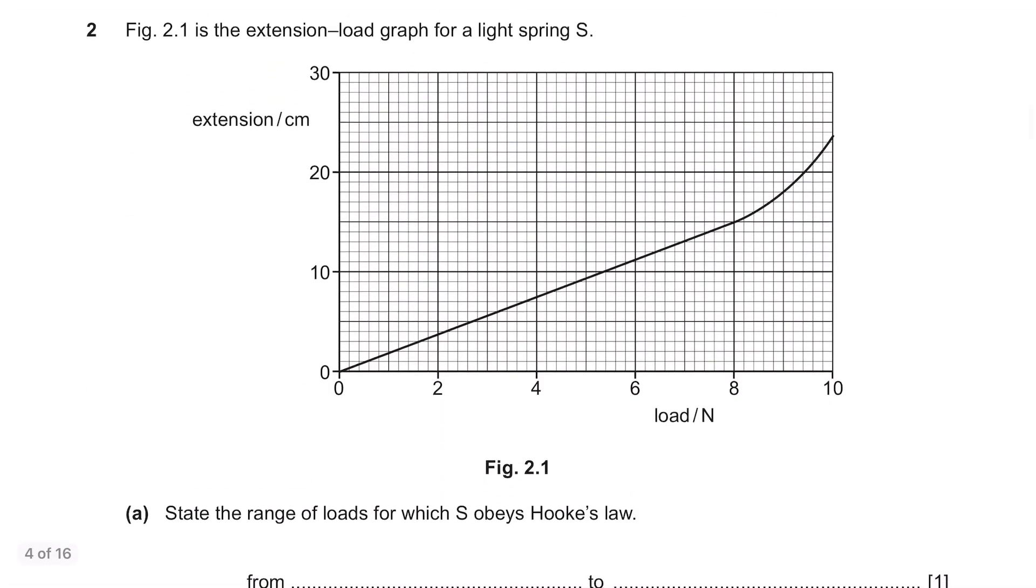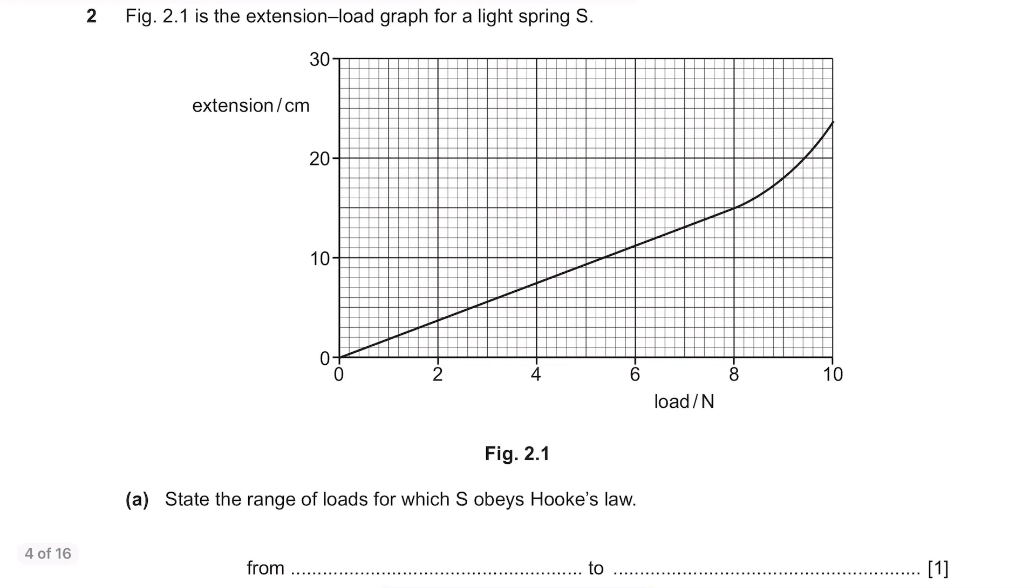Question 2. Figure 2.1 is the extension load graph for a light spring S. Part A. State the range of loads for which S obeys Hooke's law. When the load obeys Hooke's law, its extension load graph will be a straight line. So it's from 0 to 8 N. Again, units are important.